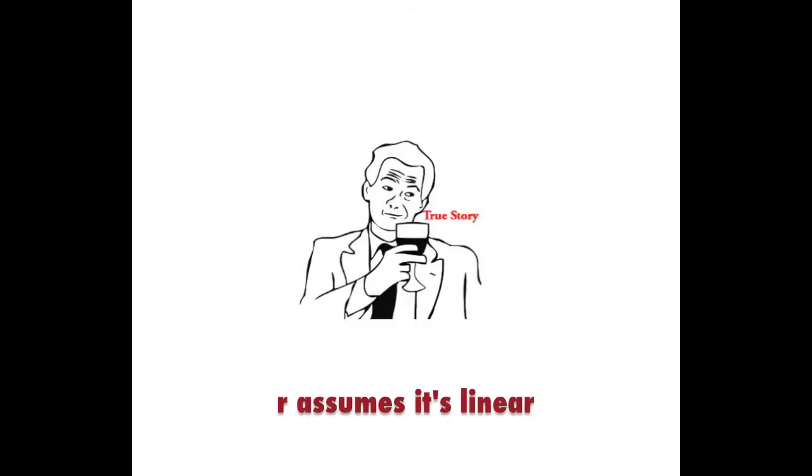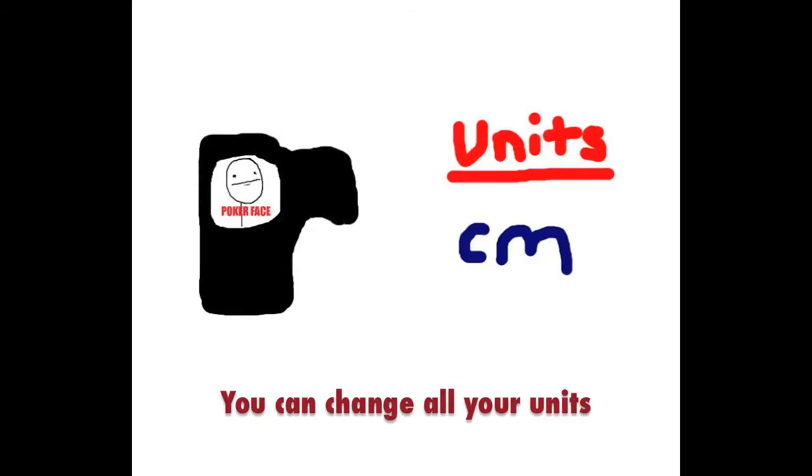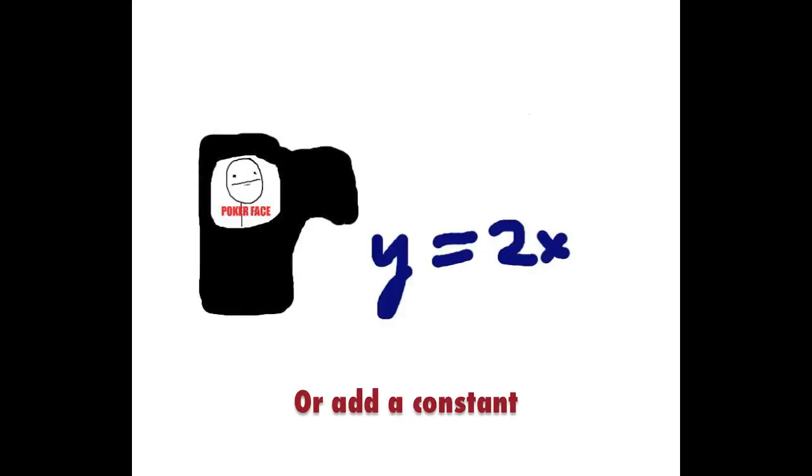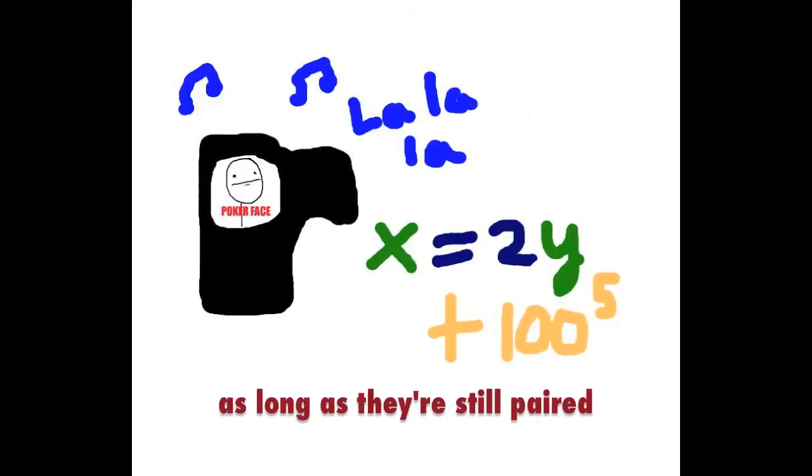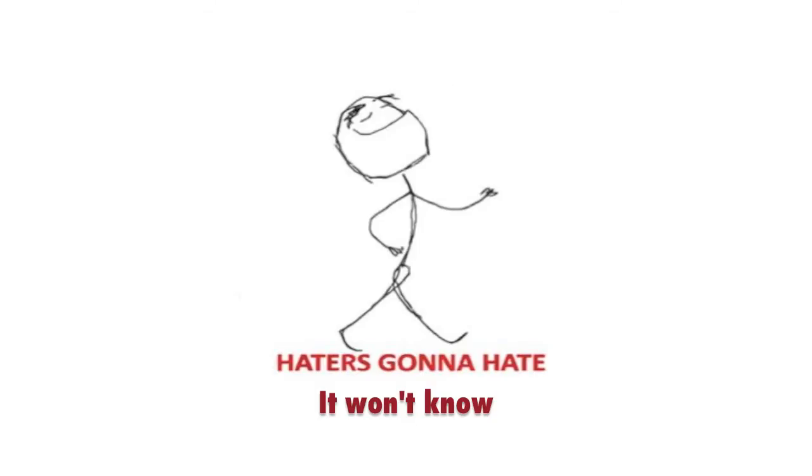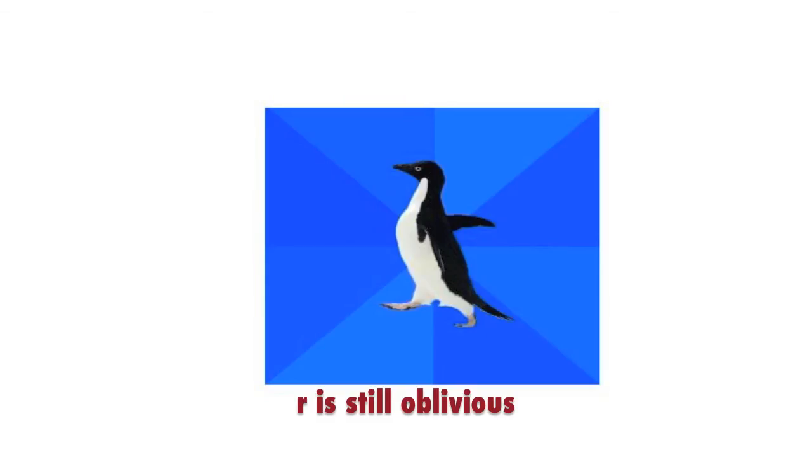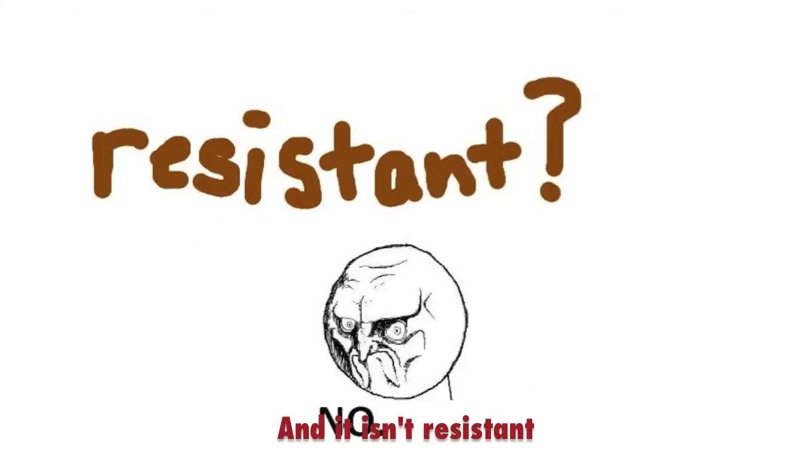R assumes it's linear. You can transform Y, X and R won't care. Add a constant, you won't even know it's there. You can just switch X and Y, long as they're still paired, they won't know. R is still oblivious and it isn't resistant.